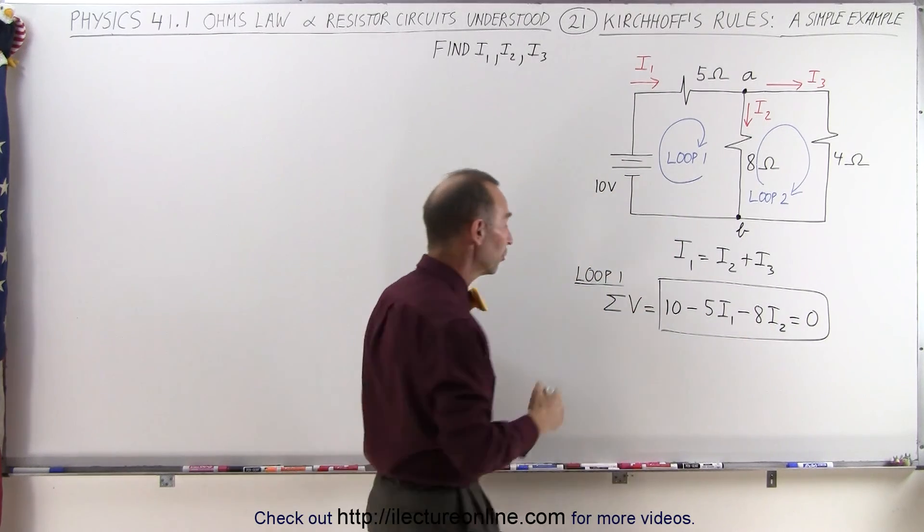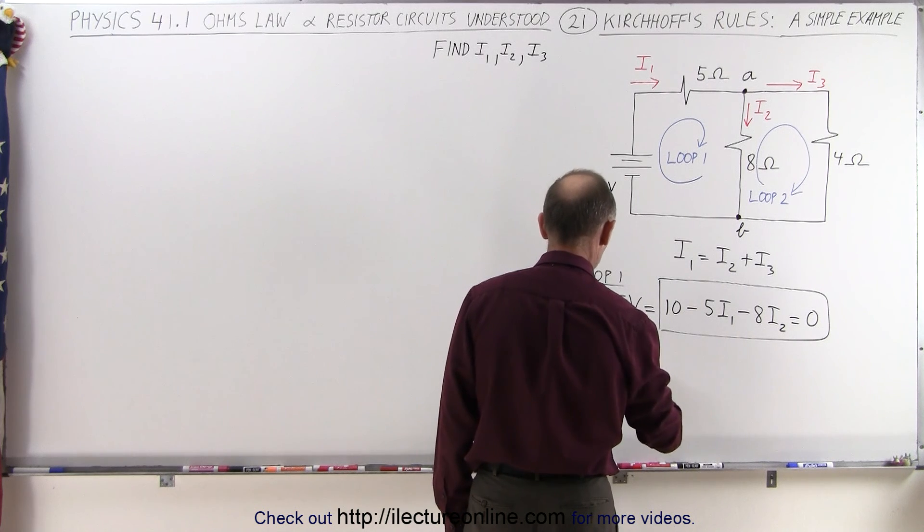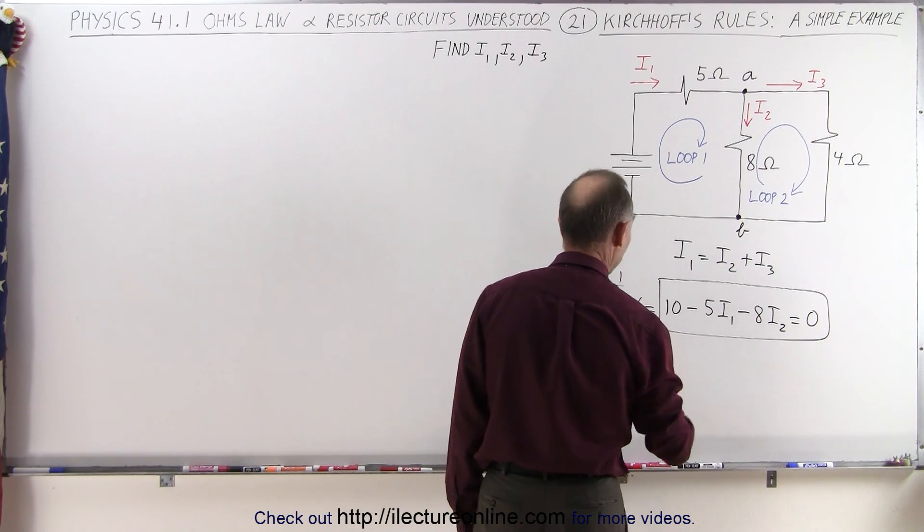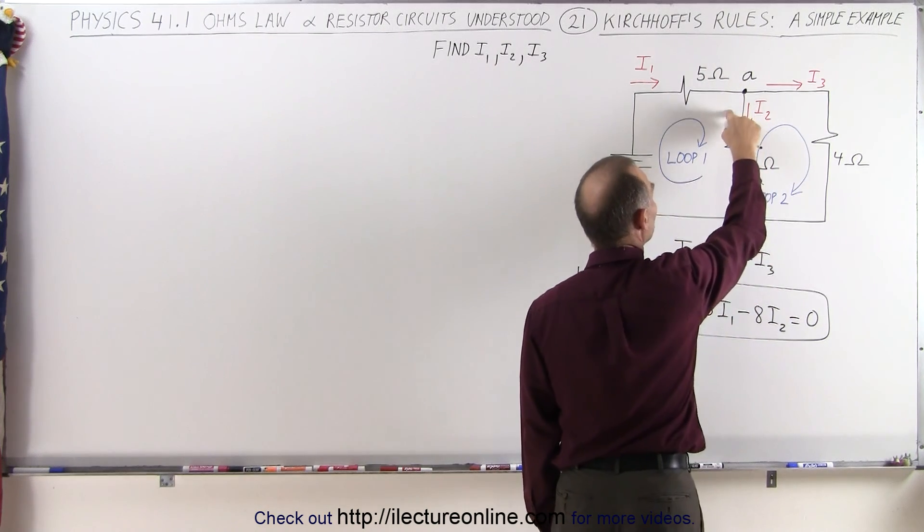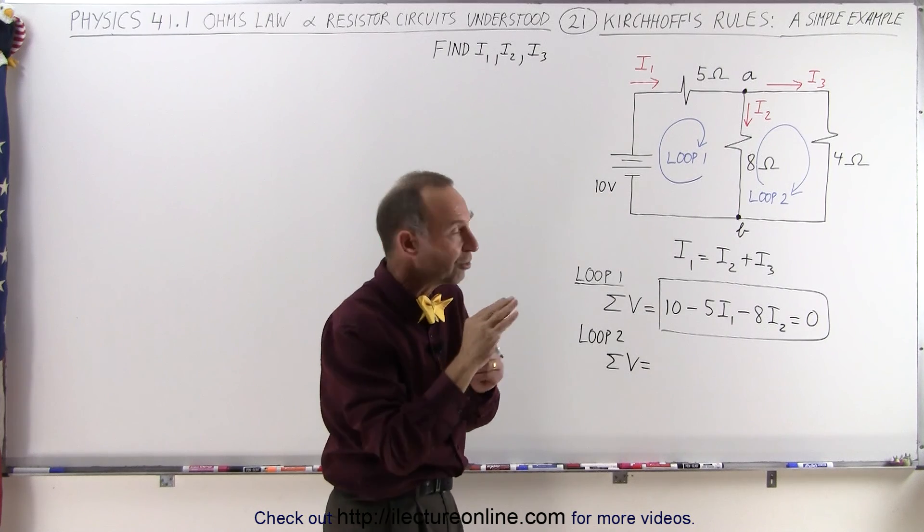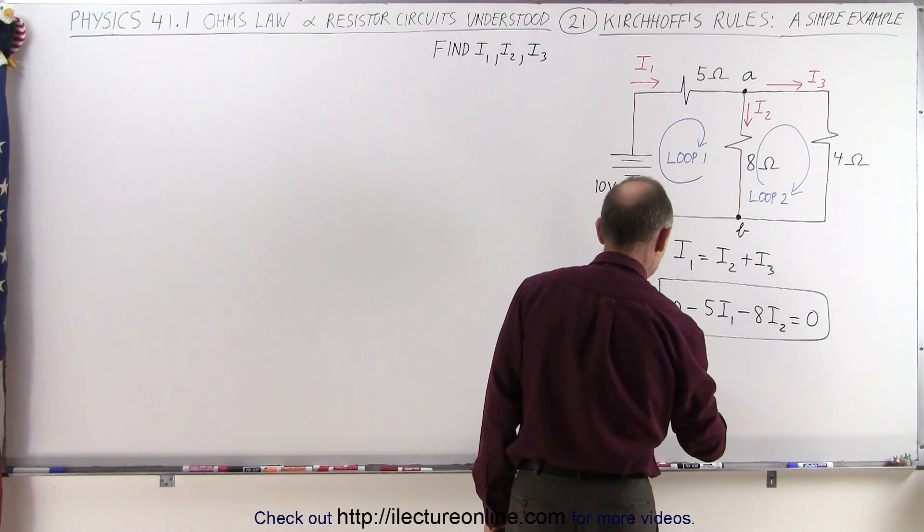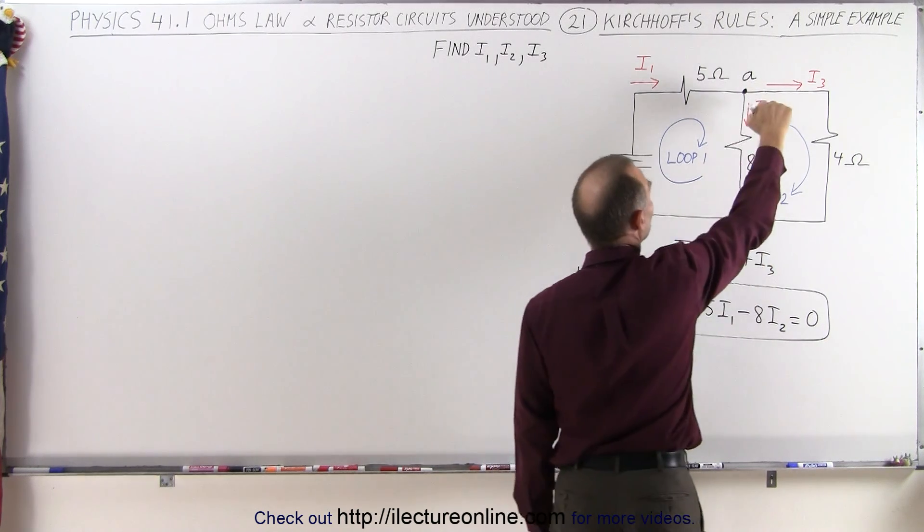We now need a third equation, so we're going to use loop two. We're going to sum up all the voltages, and let's see what they are. Starting at B, we're going to go across this resistor, but now in opposite direction of the current.